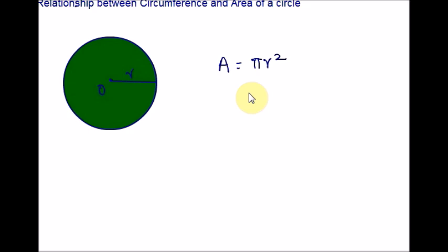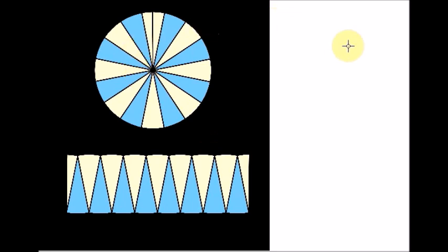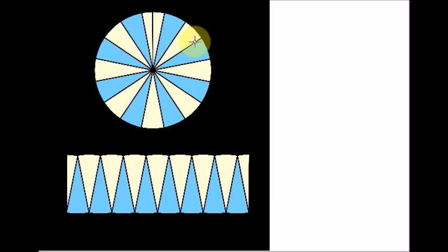The area of a circle can be visualized using two methods: using rectangles and using triangles. For the rectangle method, the circle is divided into 16 equal sectors arranged to form a parallelogram. Since sectors have equal area, each has equal arc length. The green sectors contribute half the circumference and the white sectors the other half. As more sectors are cut, the parallelogram looks increasingly like a rectangle.